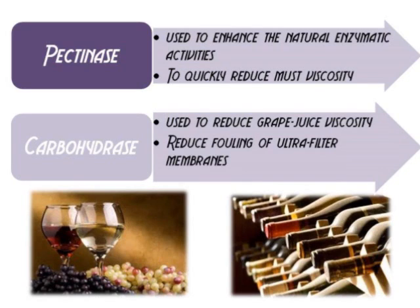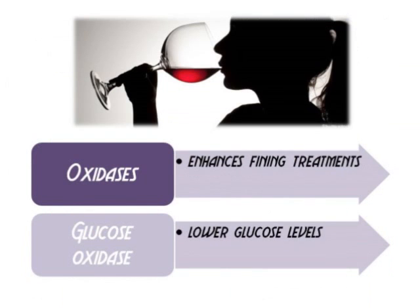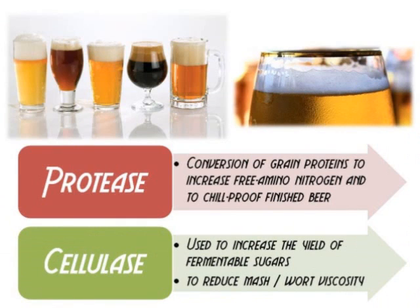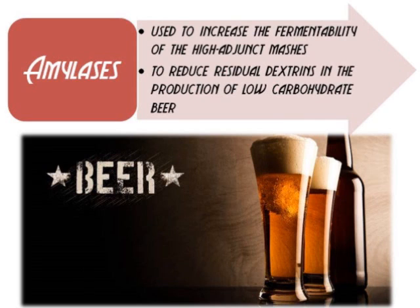Apart from pectinase, carbohydrases are used to reduce grape juice viscosity and to reduce fouling of ultrafilter membranes. The enzyme oxidase is used to enhance fining treatments, and glucose oxidase is used to lower glucose levels. In the beer making industry, protease is used for the conversion of grain proteins, to increase free amino nitrogen, and to chill-proof finished beer. Cellulase is used to increase the yield of fermentable sugars and to reduce mash viscosity. Amylase is used to increase the fermentability of high-adjunct mashes and to reduce residual dextrins in low-carbohydrate beer production.